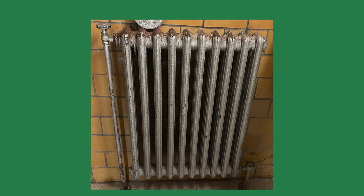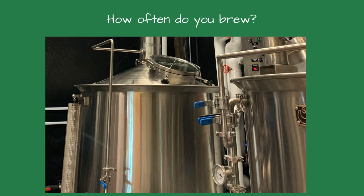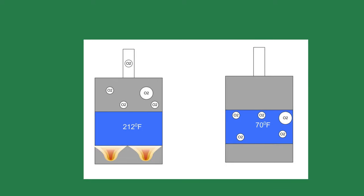One crucial difference between the two steam systems is the operating conditions. In a space heating system, once the boilers are started for winter, they remain warm for most of the heating season. However, a brewer may only brew one or two days a week. The rest of the week, the system is off and the water inside the boiler is at room temperature.